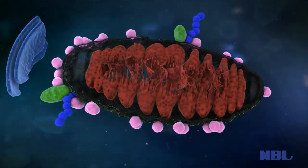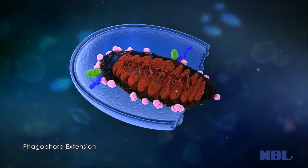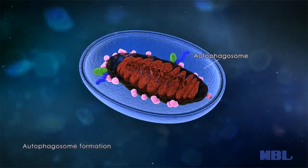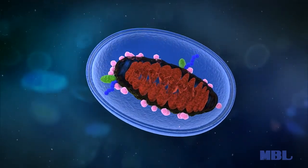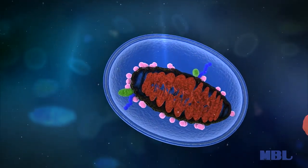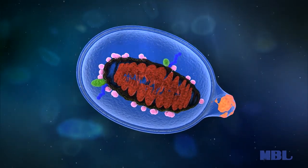Finally, the polyubiquitinated mitochondria are selectively recognized and executed by the autophagic process. Mitophagy is the selective degradation of old or depolarized mitochondria by autophagy and contributes to maintaining a healthy population of mitochondria.